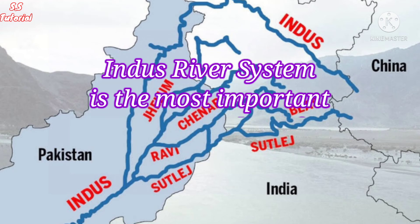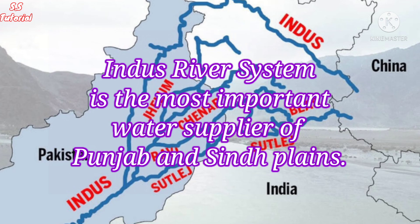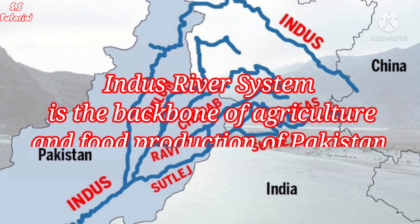The Indus river system is the most important water supplier to the Punjab and Sindh plains. It is the backbone of agriculture and food production in Pakistan.